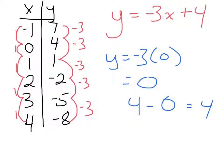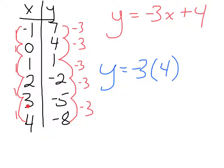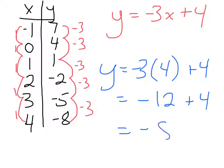Now we're just going to double check that we were right. I'm going to pick the last pair to make sure it holds true at the end of the relationship. Y equals negative 3 times 4, plus 4. Negative 3 times 4 is negative 12. Negative 12 plus 4 is negative 8, which is exactly what I have in my relationship. So this equation actually predicts what can happen later on. I give myself a little checkmark, and I'm good.